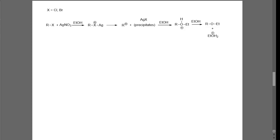That silver halide is insoluble in solution — that is what we're actually looking at. That's the precipitate we saw in solution when analyzing the reaction rates for SN1 reactions. Looking at the mechanism: we have our substrate with our leaving group on it, and we have our silver nitrate in solution. This is a salt — our silver has a positive charge, our nitrate has a negative charge.